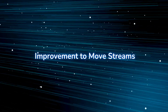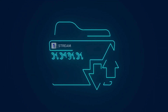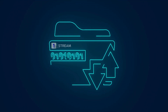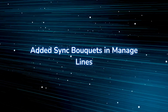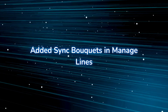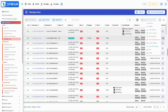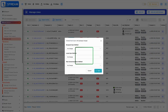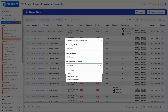Improvement to move streams — stream relocation now runs in the background with better performance and reliability. Added sync bouquets in manage lines — implements synchronization capabilities for bouquets within line management, allowing management from the listing page.